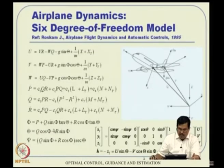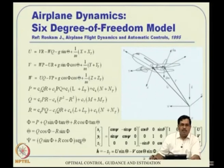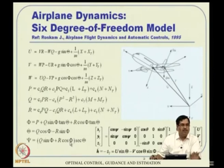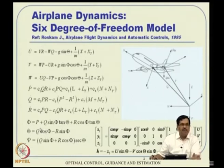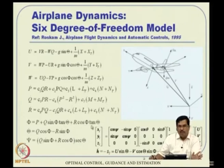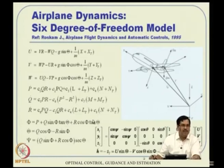The Euler angle representation has a serious problem: looking at the kinematic equations, there is a tan-theta term (sin-theta/cos-theta) and a sec-theta term (1/cos-theta). When theta approaches 90 degrees, cos-theta becomes zero, causing these rates to go to infinity — this is called gimbal lock. No matter how small the integration time step, the integration cannot be done when theta equals 90 degrees. This problem is inherent to the sequence of rotation chosen. Whether using psi-theta-phi or any other 321 sequence, a singularity will always appear at some angle. There is no way to escape this mechanism with three-parameter Euler angle representation.